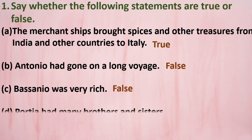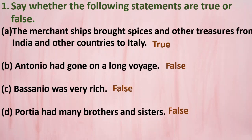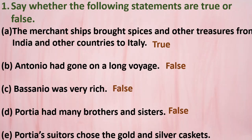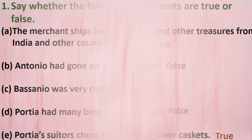Fourth statement: 'Portia had many brothers and sisters.' This is false — Portia had no brothers and no sisters. Fifth statement: 'Portia's suitors chose the gold and silver caskets.' This is true — the two princes selected the gold and silver caskets. Sixth statement: 'Bassinio borrowed money from Shylock in Antonio's name.' Yes, this is true.